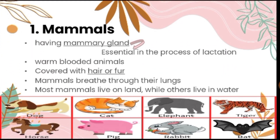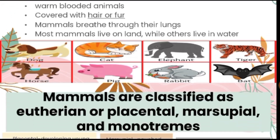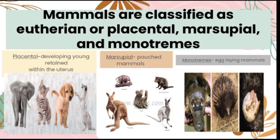The first one: mammals. Mammals have mammary glands, which are essential in the process of lactation. Mammals are also warm-blooded animals and they are covered with hair or fur. They breathe through their lungs, and most mammals live on land while others live in water. Mammals are classified as uterine or placental, marsupial, and monotremes.